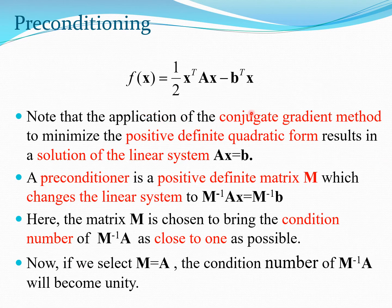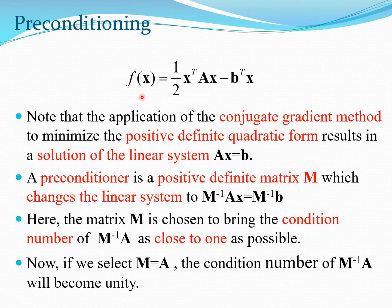Consider a typical quadratic function. If we apply a numerical method such as the conjugate gradient method to minimize this function, the method should give the exact solution. The exact solution can be obtained by taking the gradient vector and setting it equal to zero, which yields the linear system Ax = b. That is the exact solution of this system.